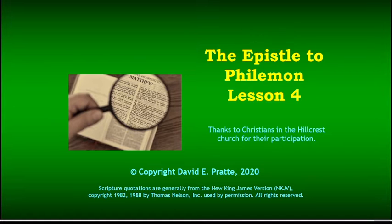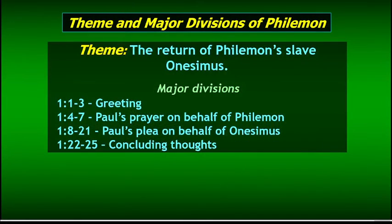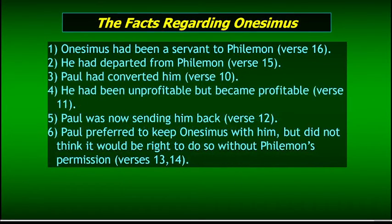Debbie: Paul's letter to Philemon is to encourage him to receive Onesimus as a slave. As we looked at the lessons we've studied, Onesimus was a slave — apparently a runaway slave — had belonged to Philemon. He had gone to Paul, and Paul had taught him the gospel and sent him back.